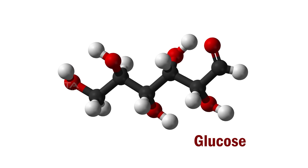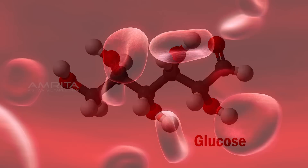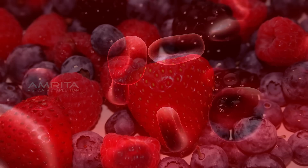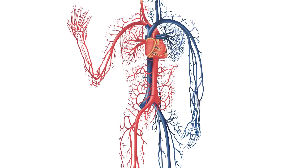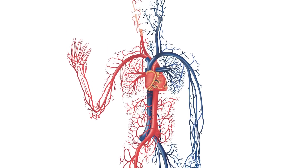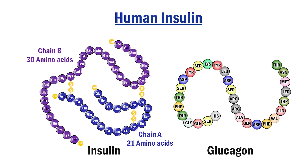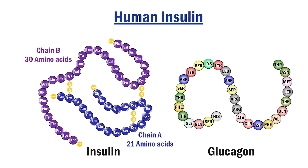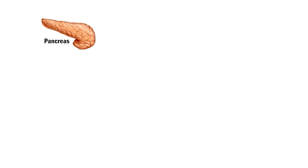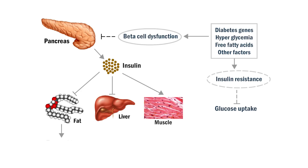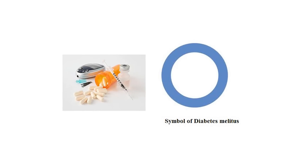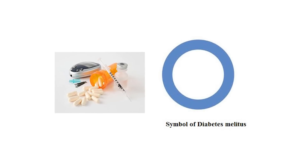Glucose is a major carbohydrate present in blood and is produced from dietary sources. The maintenance of blood glucose in our body is mainly controlled by hormones insulin and glucagon. A defect in insulin secretion, insulin action, or both results initially in an impaired glucose tolerance and causes hyperglycemia, which further leads to diabetes mellitus.